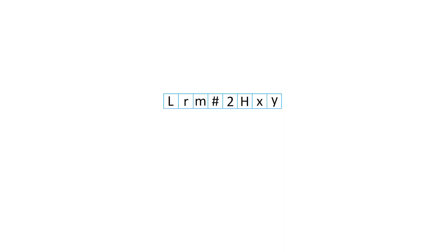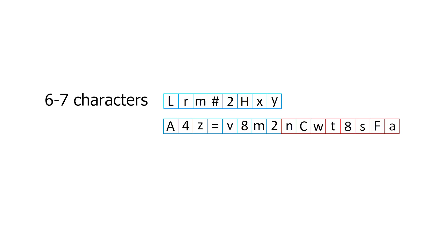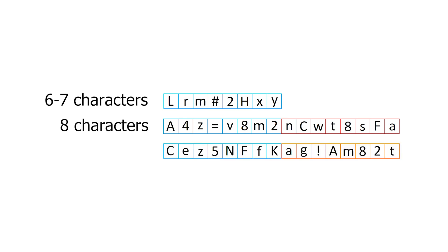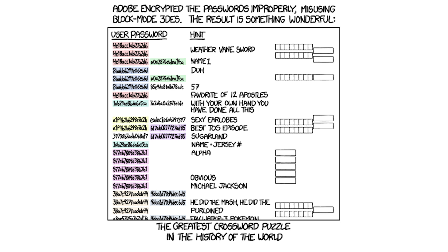So in summary: if there's one block, we know the password was 6 or 7 characters long, since the minimum length was 6. If there's two blocks and the second one is the hash of the null terminator, then the password is exactly 8 characters long. And if there's two random blocks, it's between 9 and 15 letters long. This leads to a really massive, crossword-like puzzle, best illustrated by this XKCD comic.